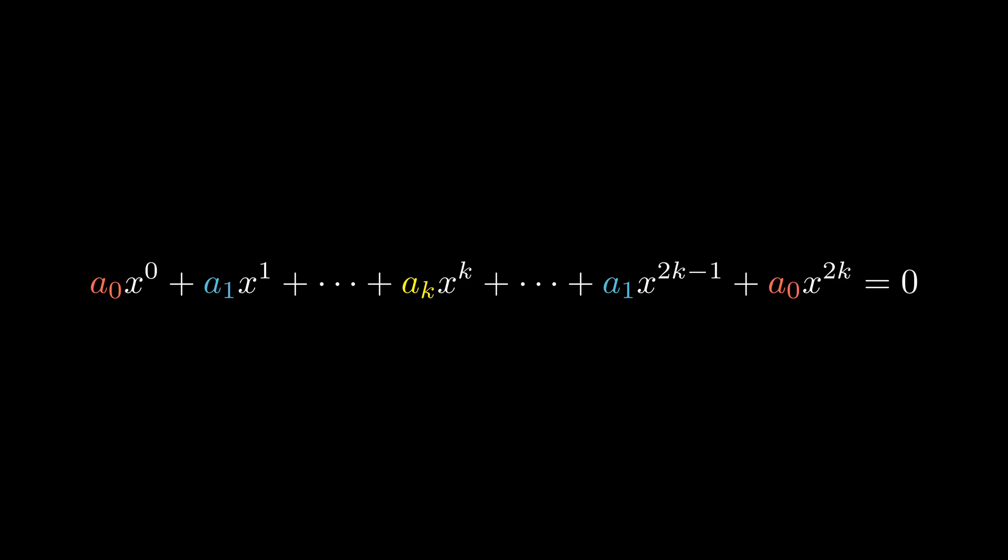Given a polynomial with an even degree, say 2 times k, and given the symmetry in the coefficients, let's carry out the same steps we did earlier. First, divide by x to the degree divided by 2.